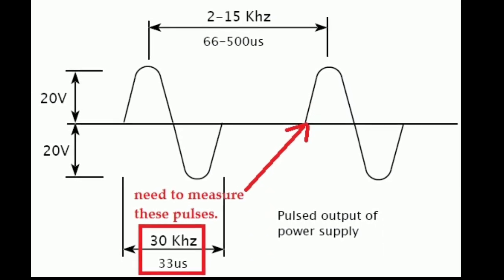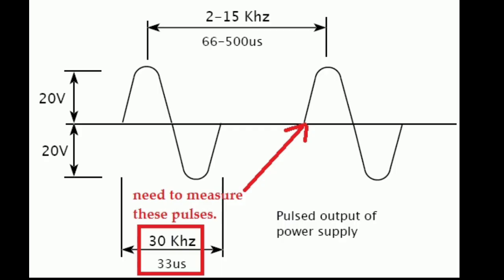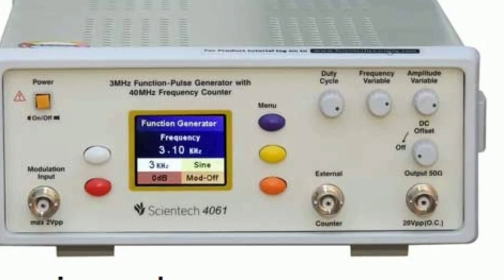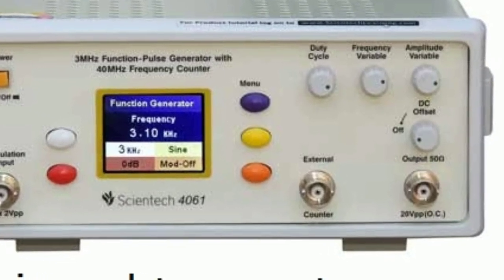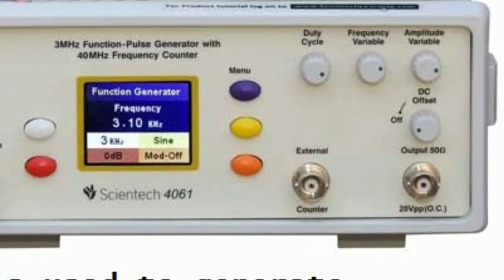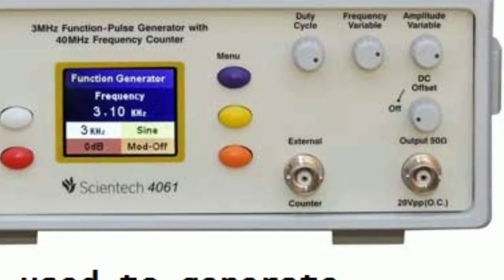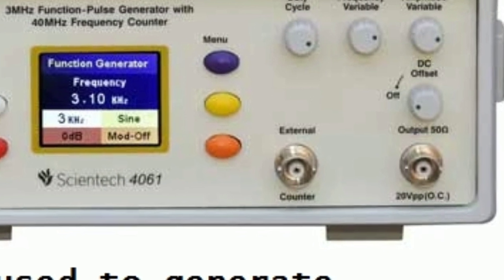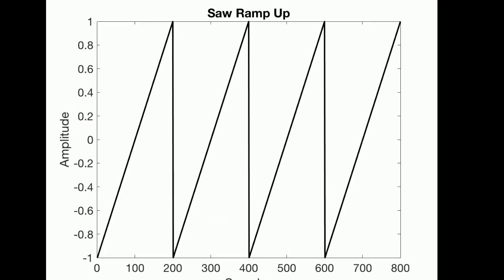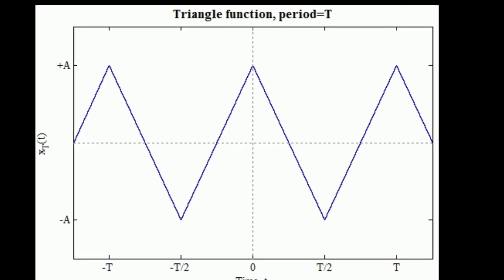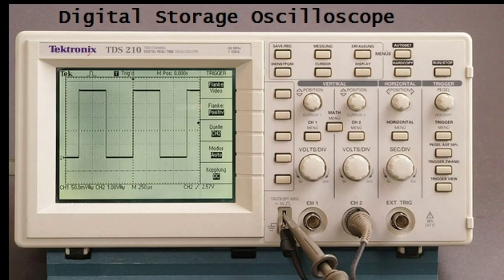First of all, a function generator is a device which is used to generate different types of electrical waveforms like sine, ramp, triangular, etc., with a wide range of frequencies available.